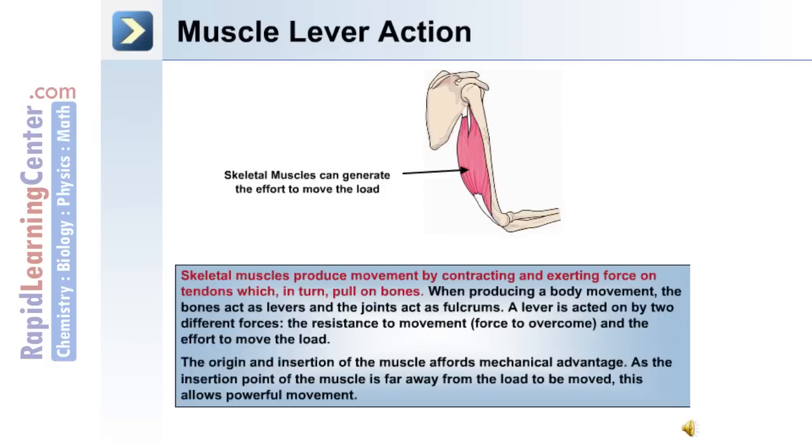The skeletal muscles produce movement by contracting and exerting force on tendons, which in turn pull on bones. When producing a body movement, the bone acts as levers and the joints act as a fulcrum. A lever is acted on by two different forces: the resistance to movement, which is the force to overcome, and the effort to move the load.